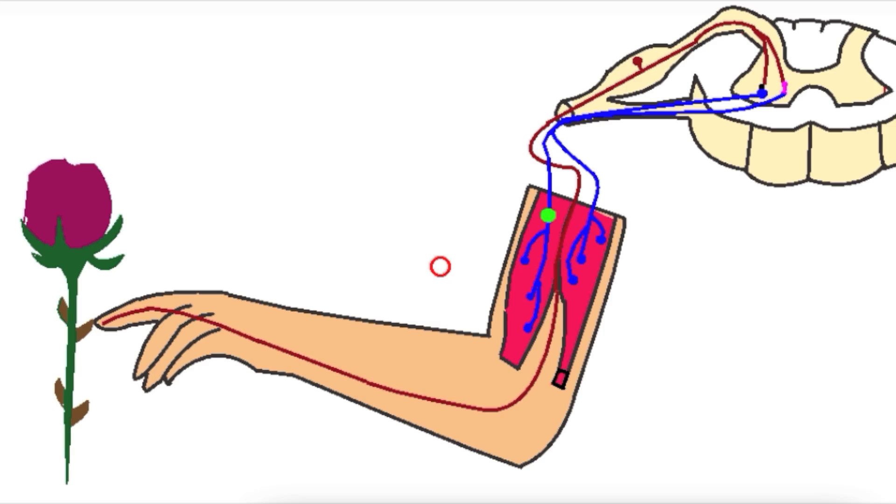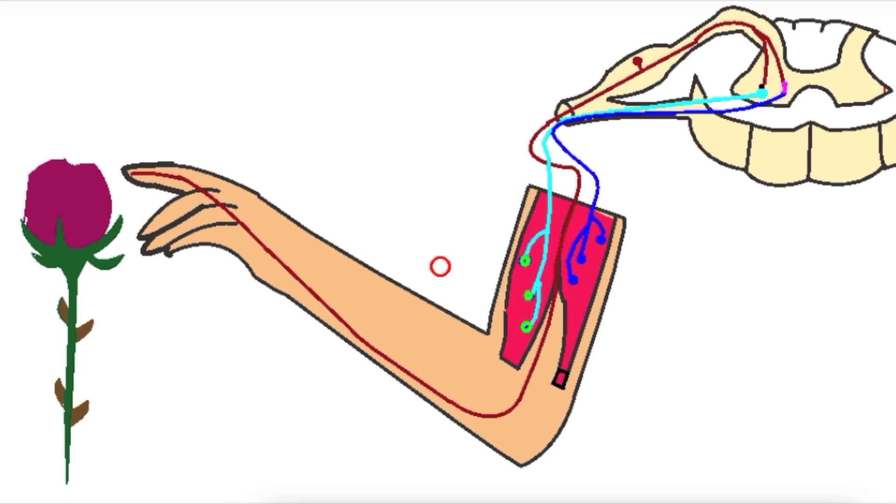The motor neurons control the skeletal muscle. The flexor muscles in the front of the arm are directed to contract while the extensor muscles relax.